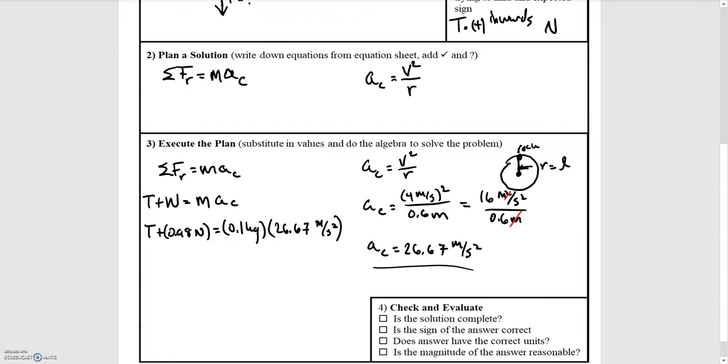Coming down here to execute our plan, we're going to start by solving for the centripetal acceleration. We know the tangential velocity, which is 4 meters per second, and we square it. The radius of this circular path is just the length of the string, so that's 0.6 meters. Then we find an acceleration of 26.67 meters per second squared.